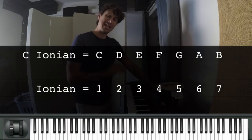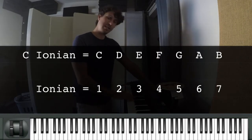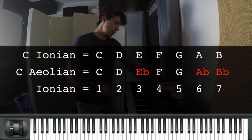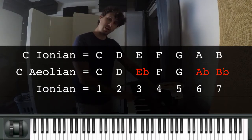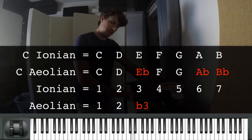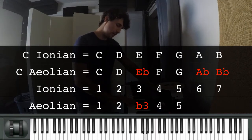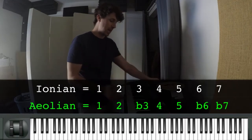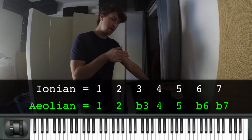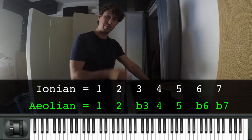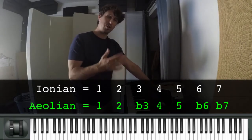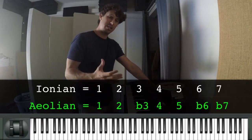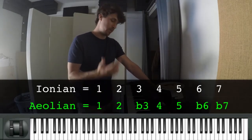The next mode is Aeolian — C Aeolian, or C natural minor. Compared to Ionian: we have one, two, flat three, four, five, flat six, flat seven, then back to C. So Aeolian is: one, two, flat three, four, five, flat six, flat seven. These flats and sharps simply describe how each scale differs from the major scale, from the Ionian mode.